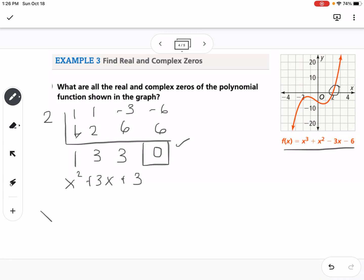So I'm going to use the quadratic formula. So this would be negative 3 plus or minus the square root of 3 squared minus 4 times 1 times 3 over 2 times 1. So if I simplify this, I'm going to get negative 3 plus or minus the square root of negative 3 over 2.